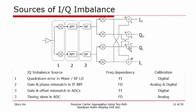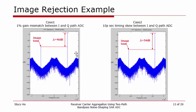The sources of IQ imbalance are summarized here. They are: quadrature error in the first down-conversion, mismatch in the anti-aliasing IF band-pass filter such as gain and phase mismatch, gain and phase mismatch in the band-pass ADCs, and timing skew mismatch in the ADCs. Some of these IQ imbalances are frequency independent and some are frequency dependent, but they all typically must be calibrated. For example, a 1% gain mismatch between the I and Q band-pass ADCs results in a −46 dB image, and a 10 picosecond sampling timing skew results in a −54 dB image.